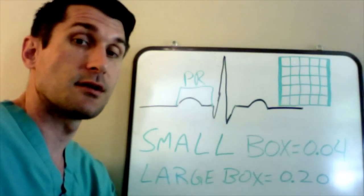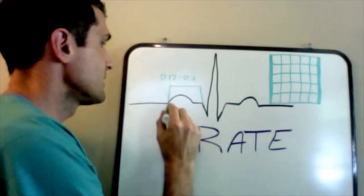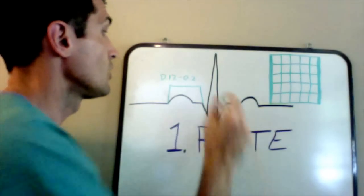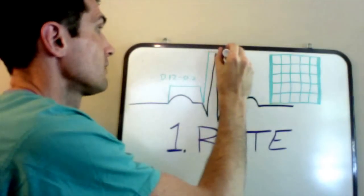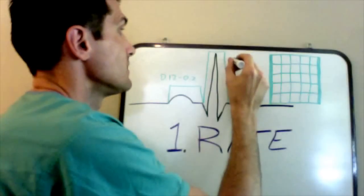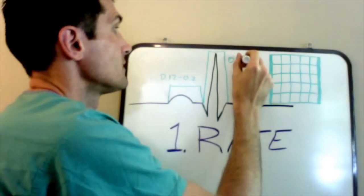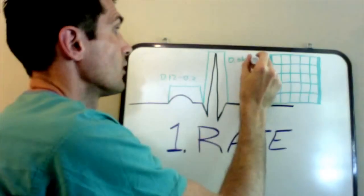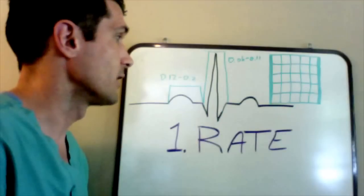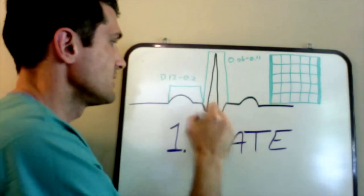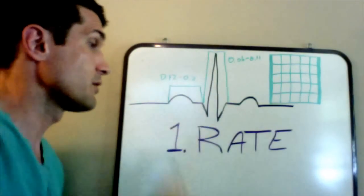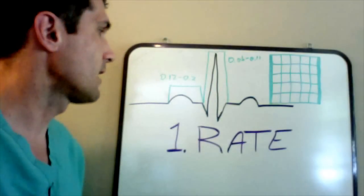The PR interval is followed by the QRS. The QRS is measured from the beginning of the Q to the end of the S, and that should be 0.06 to 0.11 seconds. We'll focus on interpreting those two intervals — the PR interval and the QRS duration — for the basic EKG. The QT segment is something we're not really going to talk about here.